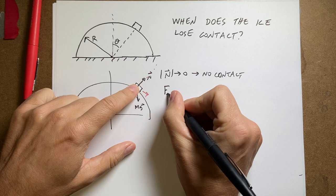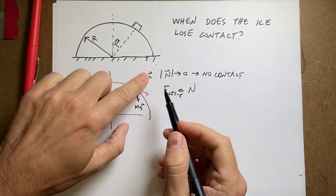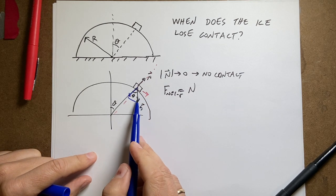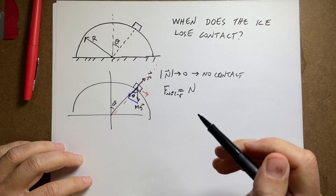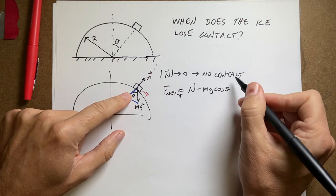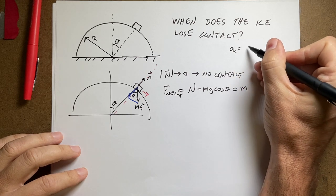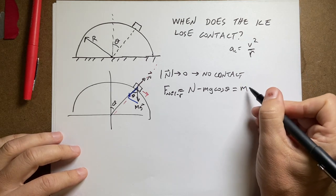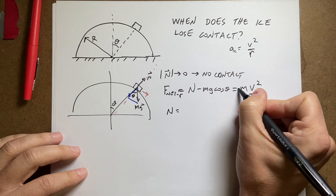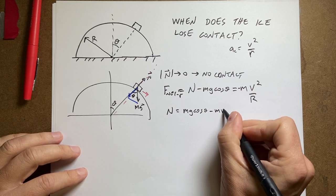So if I write this f net in the r direction, it's going to be equal to n, right? I have the normal force pushing in the r direction. And then I have a component of the gravitational force pulling this way. And so that is the gravitational force mg. This side would be mg cosine theta. So this would actually be minus mg cosine theta. Now, that's the net force in the r direction. What's the acceleration in the r direction? Well, that would be m times the centripetal acceleration, v squared over r. Now, I can solve this for n. And I get n equals mg cosine theta minus m v squared over r.